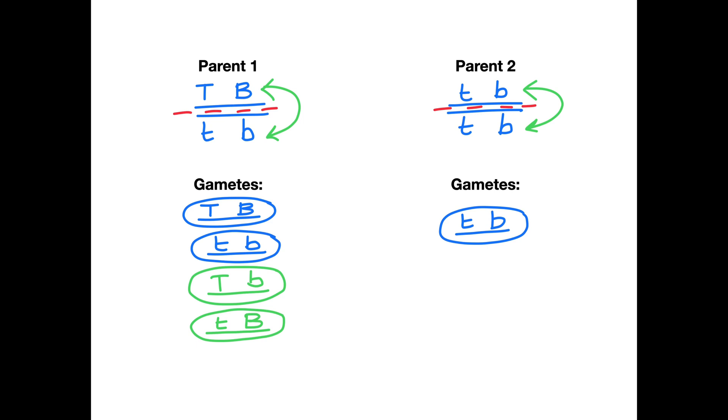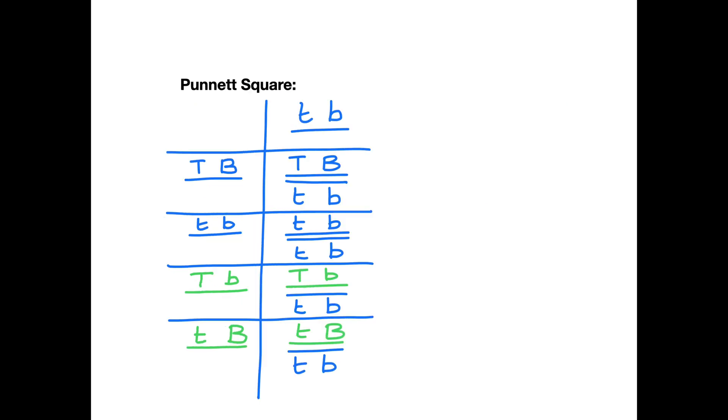So we're going to take these gametes and we put the gametes into a Punnett square. Now notice, I realize that there are a lot of lines here, but we're trying to maintain the same notation because that way you can observe the linkage and where the alleles are in terms of being linked on the same chromosome. Now I've also maintained that my recombined gametes, the recombinants, are in green.